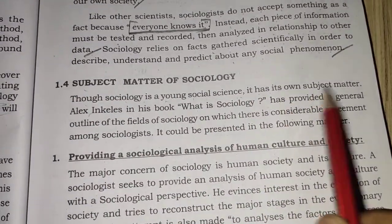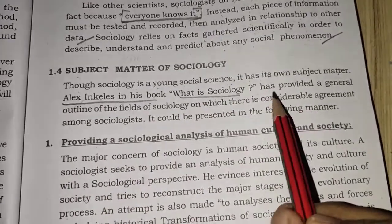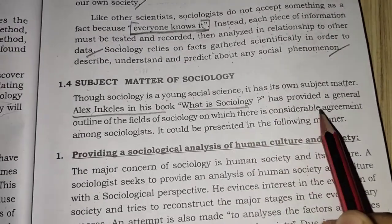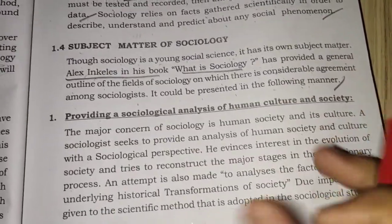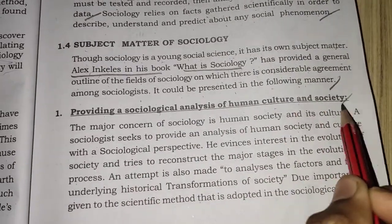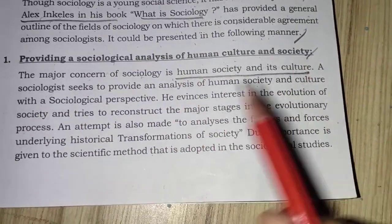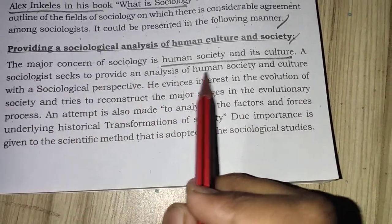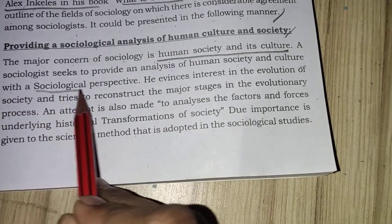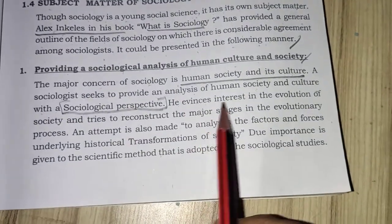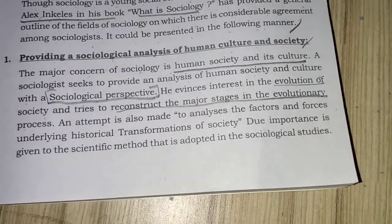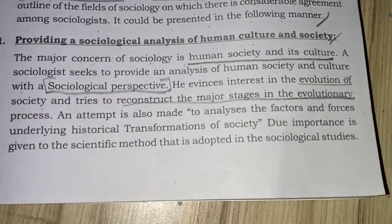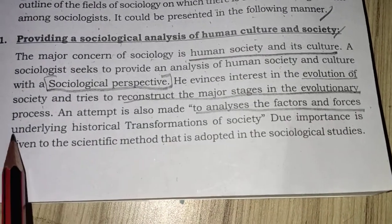Moving on to the subject matter of sociology. Since sociology is a young social science, Alex Inkeles in his book 'What is Sociology?' has provided a general outline of the fields of sociology on which there is considerable agreement among sociologists. First is the sociological analysis of human culture and society. The major concern of sociology is human society and its culture, studied with a sociological perspective. It is interested in the evolution of society and tries to reconstruct the evolutionary process, analyzing factors that underlie historical transformation.